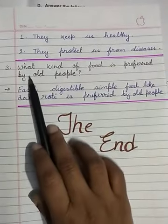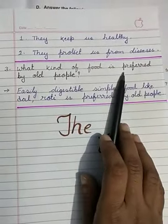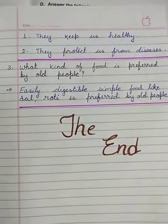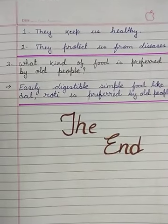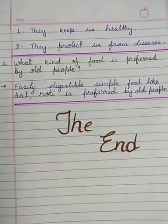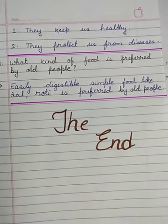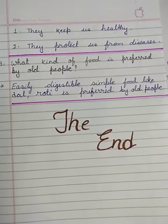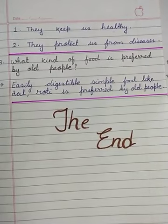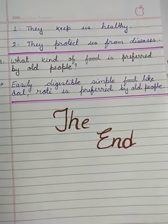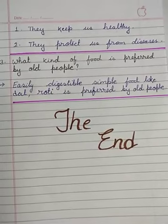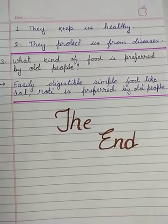What kind of food is preferred by old people? The food that can be easily chewed and digested. You cannot eat pizza, chowmein, or burger because it takes time to digest. They will eat easily digestible, simple food — like dal roti or doodh roti — is preferred by old people.